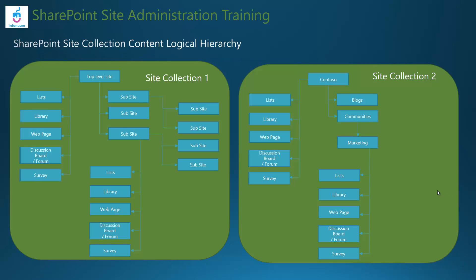This slide shows a more detailed view of site collection content. Within site collection one, there is a top-level site, and since a top-level site is itself a site, you can add lists, libraries, web pages, discussion boards, and surveys. You can also add sub-sites as child sites, and each child site can have the same types of content.